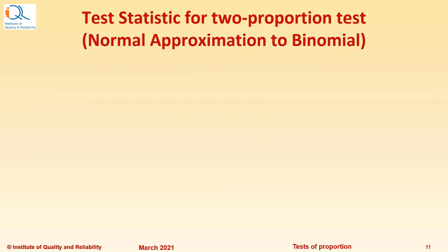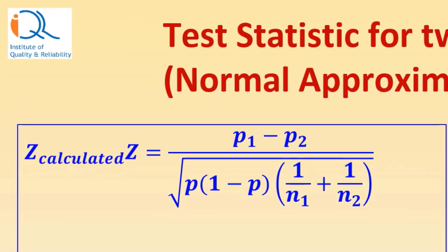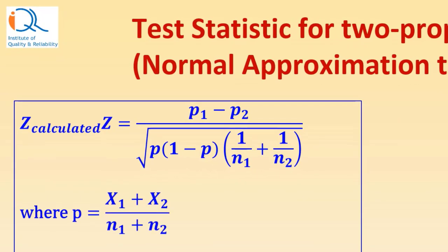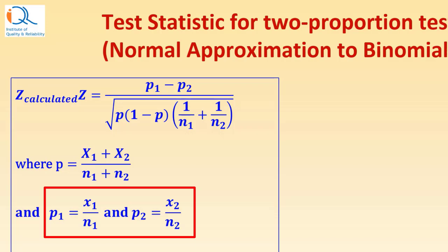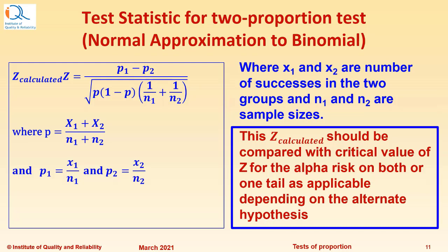We will see now the test statistic for two proportion test using normal approximation to binomial. The Z calculated value equals p1 minus p2 divided by square root of p times 1 minus p times bracket 1 upon n1 plus 1 upon n2. Where p is the average proportion x1 plus x2 upon n1 plus n2, and p1 equals x1 upon n1 and p2 equals x2 upon n2. Where x1 and x2 are the number of successes in the two groups, and n1 and n2 are sample sizes. This Z calculated should be compared with critical value of Z for the alpha risk on both or one tail as applicable depending upon the alternate hypothesis.